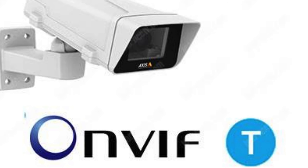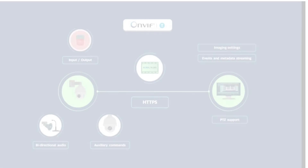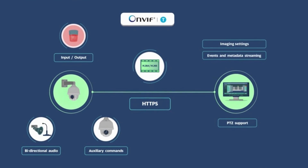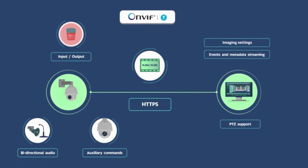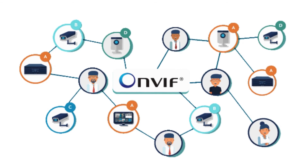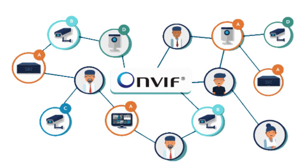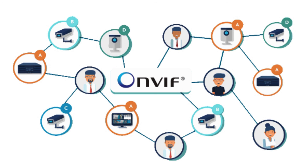Profile T is used for advanced video streaming and can be considered an advanced version of Profile S. It supports video streaming features such as H.264 and H.265 encoding formats, imaging settings, and alarm events such as motion and tampering detection. It is basically responsible for H.264 and H.265 video compression. Its other major functions include metadata streaming and bi-directional talk. Profile T also covers HTTPS streaming, PTZ configuration, motion region configuration, and digital inputs and relay outputs.